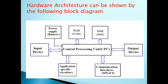Another hardware architecture can be shown by a block diagram. It consists of input devices and output devices, a central processing unit (CPU) where computation is carried out, application-specific circuitry, and communication interfaces such as SPI and I2C — these are serial bus interfaces. The system also requires a battery, ROM for storing the program code, and RAM for data. The CPU takes the input, processes it, and sends it to the output in association with all these peripherals.